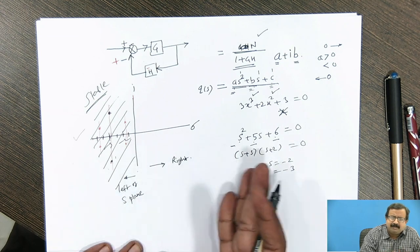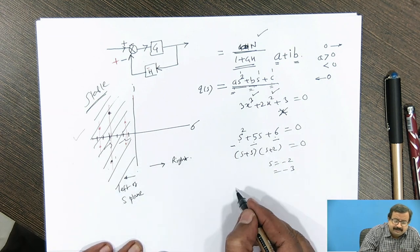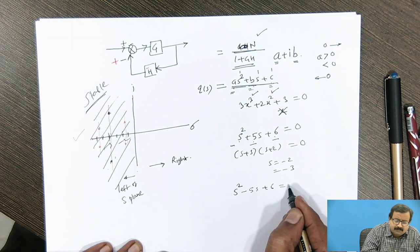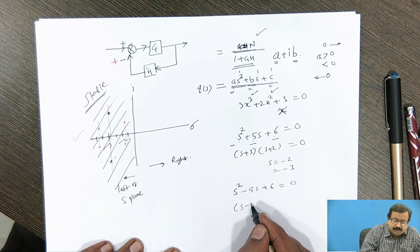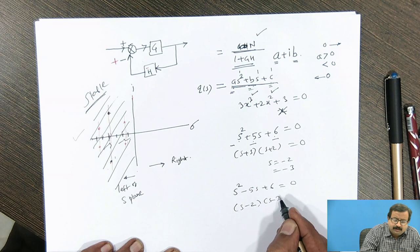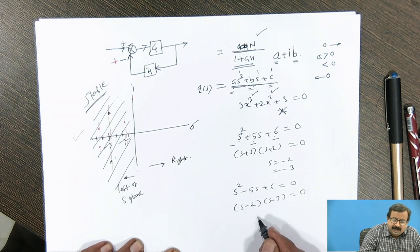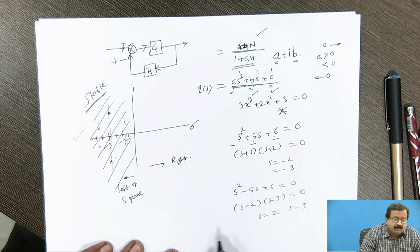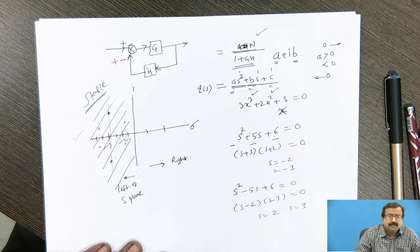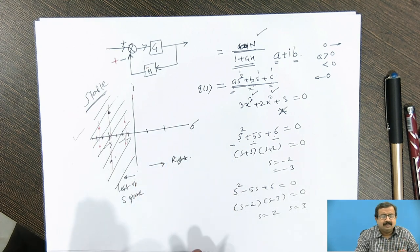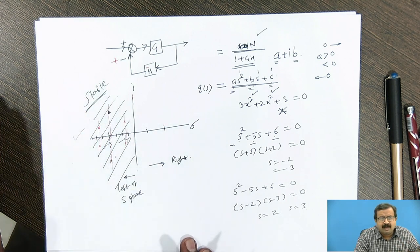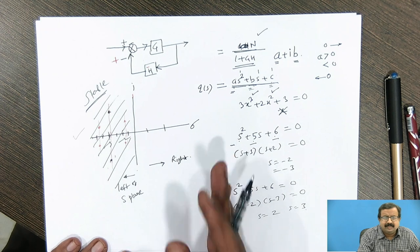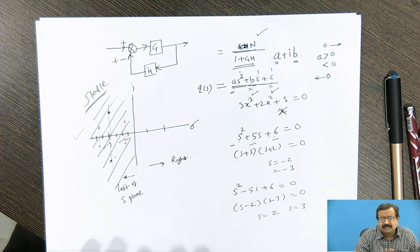I can still get by multiplying minus 1 the same answer. But on the contrary, suppose it is s square minus 5s plus 6 is equal to 0. Now my roots are s minus 2 into s minus 3 is equal to 0, and s is equal to 2 and s is equal to 3. So what is happening now? I will get two roots here. The stability condition says that your roots must be on the left half of the s-plane. It should not be on the right half of the s-plane. That is the necessary condition.